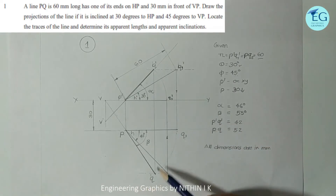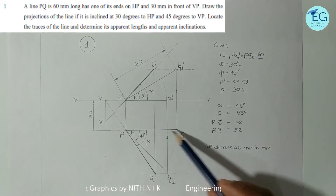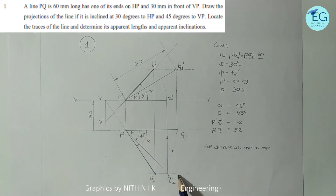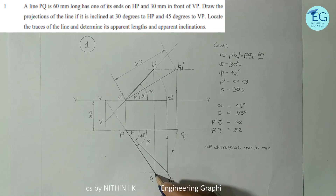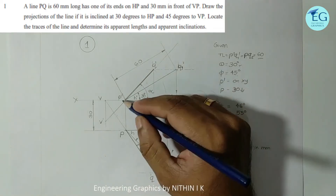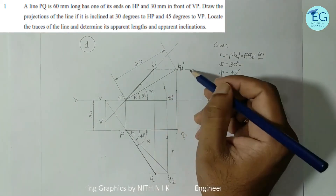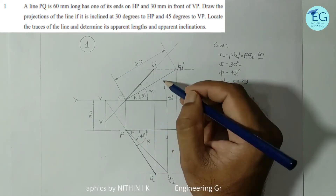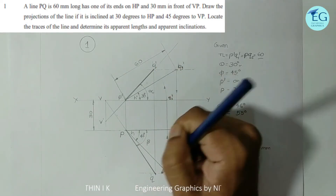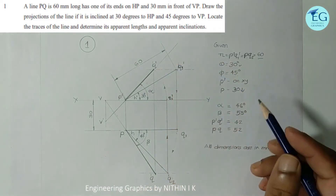The final answer includes the front view and top view. We obtain the locus of Q from P'Q1' and the locus of Q from P'Q2'. The intersection point gives us Q. The point Q is fixed, and its location in the top view is Q1' and in the front view is Q2'. The projection is now complete.